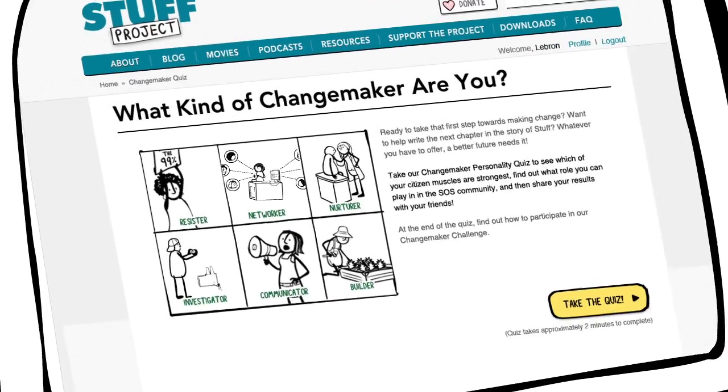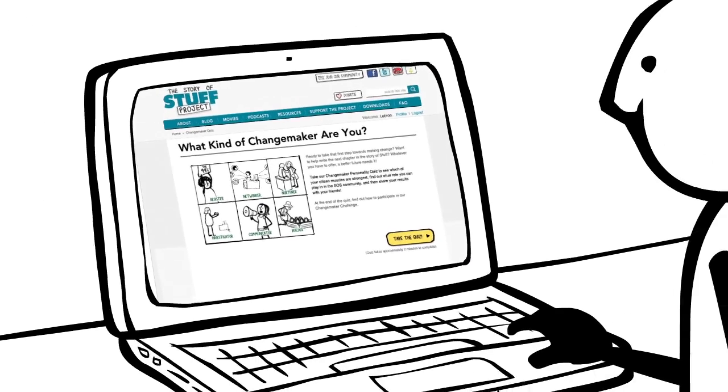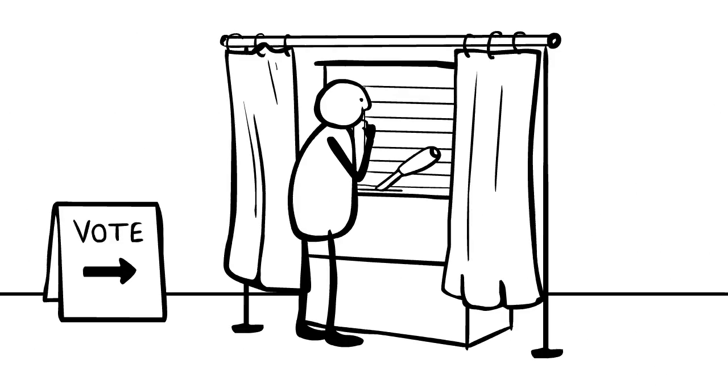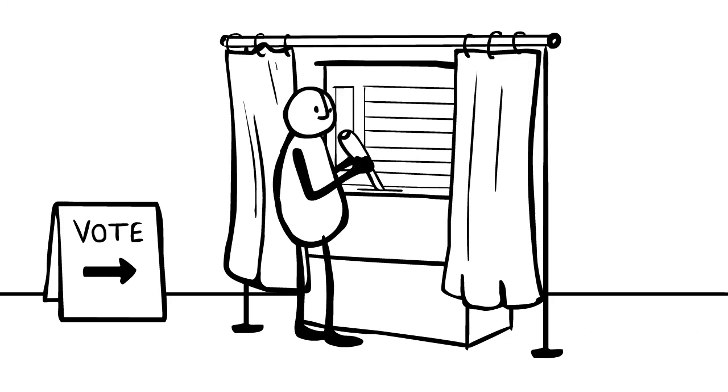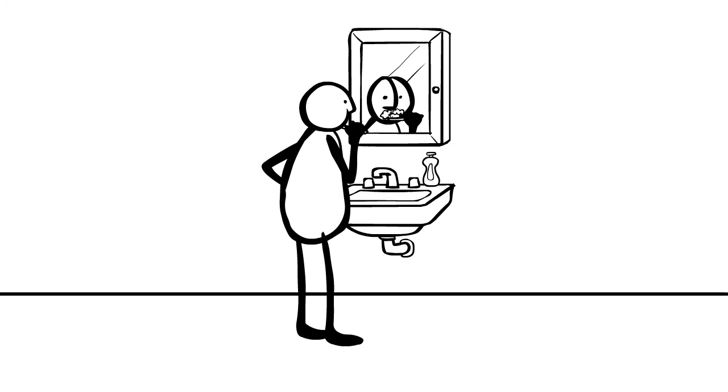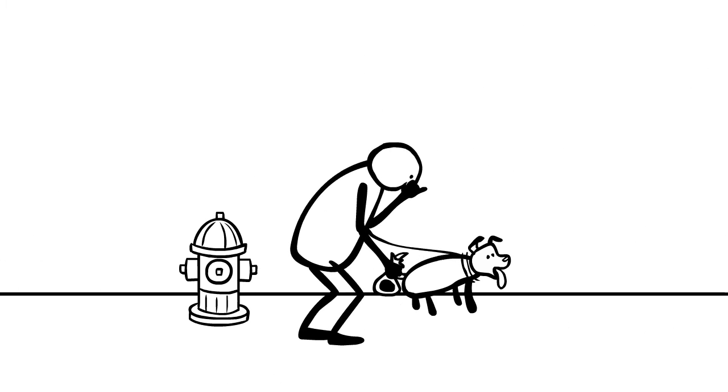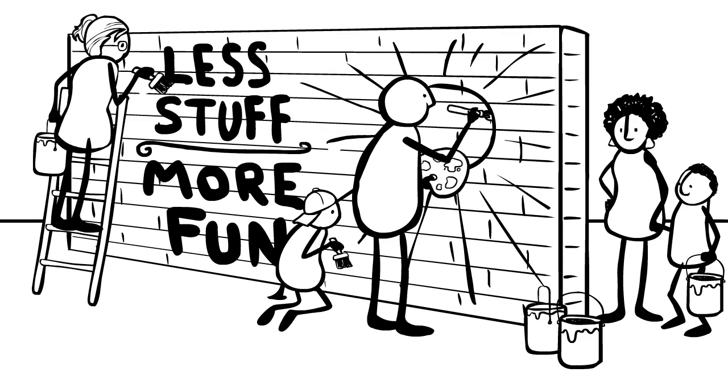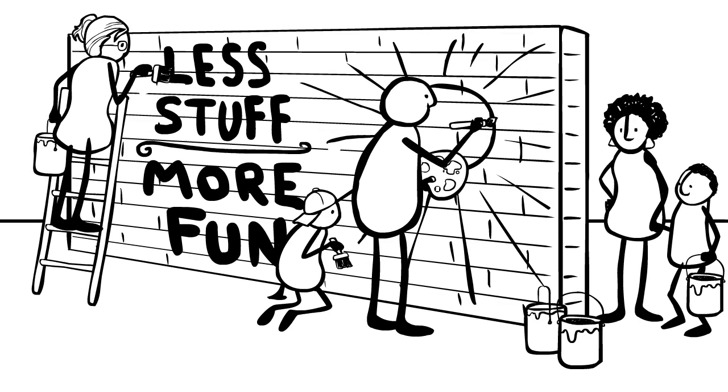At storyofstuff.org, you can explore these types of change makers and find your first or your next step to take action. Being a responsible citizen starts with voting. That's one of those basic things that everyone's just got to do. But it gets way more exciting and fun when we put our unique skills and interests to work alongside thousands of others.